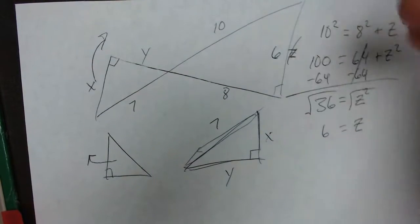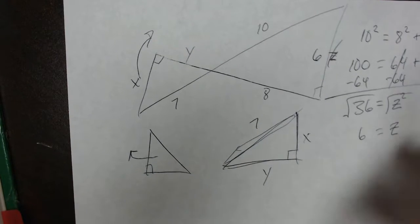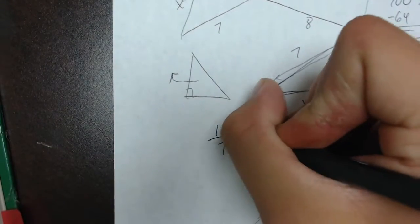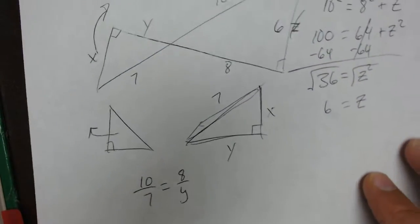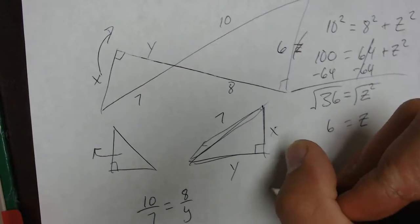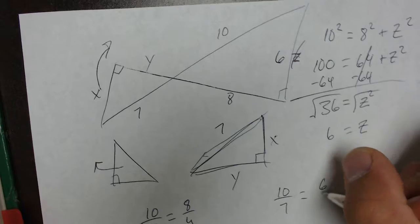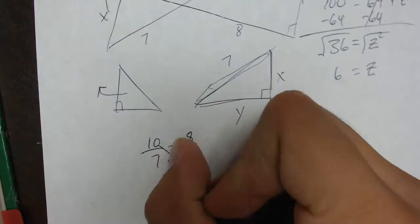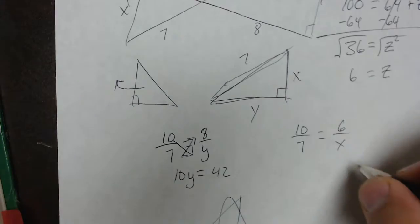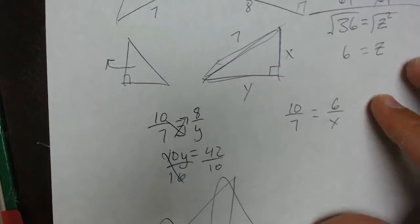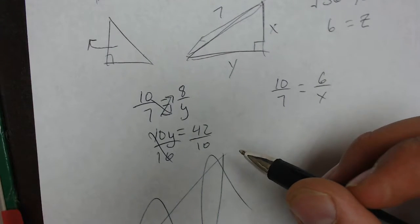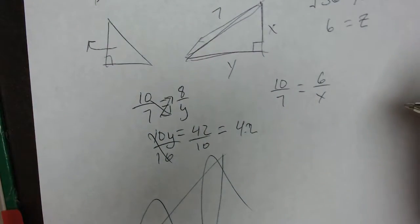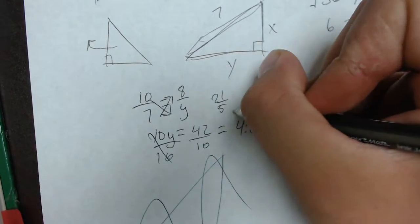Instead of putting Z here, I can just put 6. Now, I can solve these last two pieces using ratios. I can say 10 is to 7 as 8 is to Y. So that will be my first ratio. Solve by cross-multiplying. I get 10Y equals 42. Divide each side by 10. Decimal form is really easy, 42 divided by 10 is just going to equal 4.2. If I wanted to put it into a fraction, it would be 21 over 5.